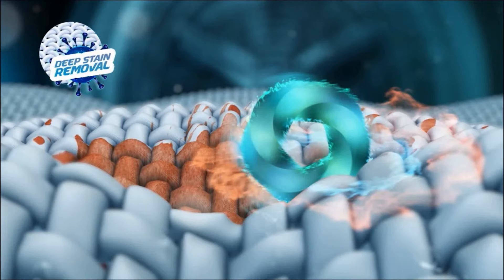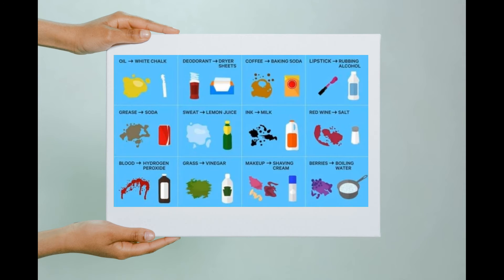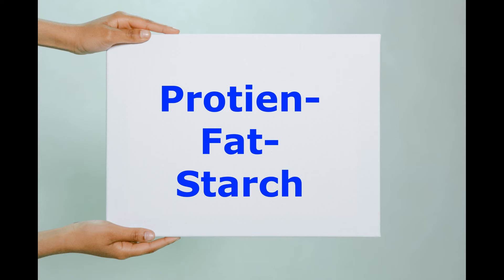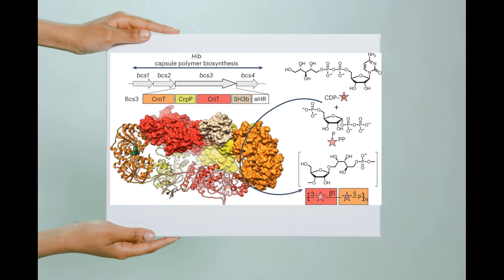How is it possible for enzymes to remove tough stains on fabrics? What is the mechanism? It is very simple. Whatever the stain may be on our fabrics — it may be a blood stain, tea, coffee, tomato sauce, or some other foodstuff — from a chemistry point of view, it may be either proteins, fat, or starch. That's all.